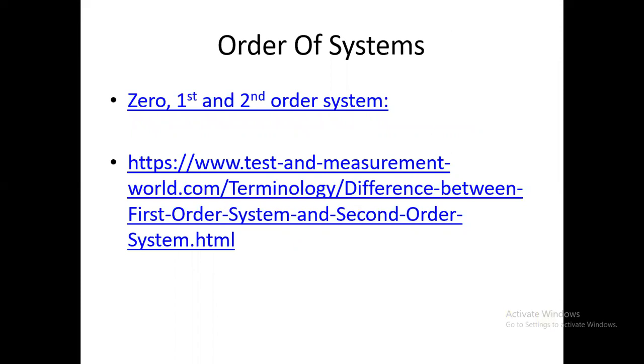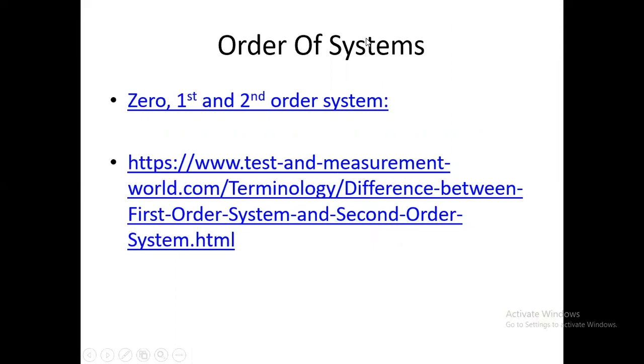There are three types or categories of systems: zero order system, first order system, and second order system. For detail and description of these systems, I need to follow a link which I already shared with you. We will move further towards this link and find out the important aspects — the introduction and detail about the zero, first, and second order systems.